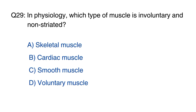Question 29: In physiology, which type of muscle is involuntary and non-striated? The right option is option C, smooth muscle.